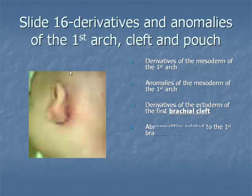Item 4: The most common abnormalities of the first branchial cleft are associated with the external auditory canal. These can generally be classified as aplasia, atresia, stenosis, and duplication. The common diagnosis of recurrent purulent draining otitis media with lymphadenopathy should alert the clinician to investigate a possible first branchial cleft duplication anomaly, classified by Work as Type 1 or Type 2 anomalies.